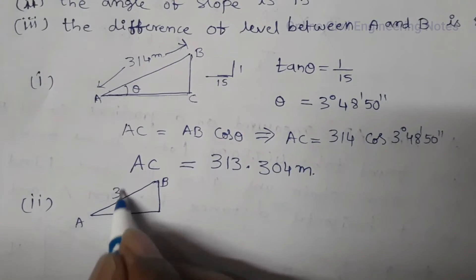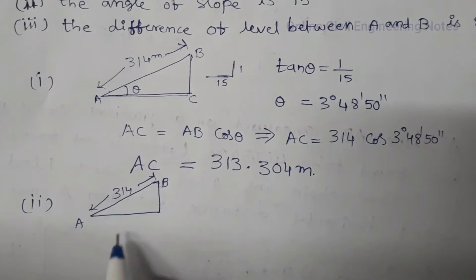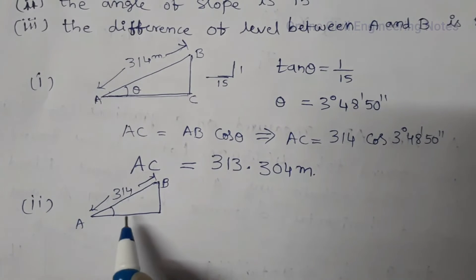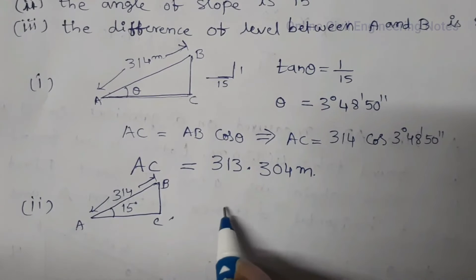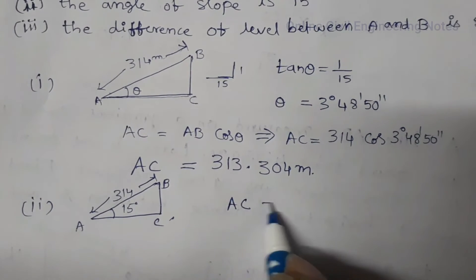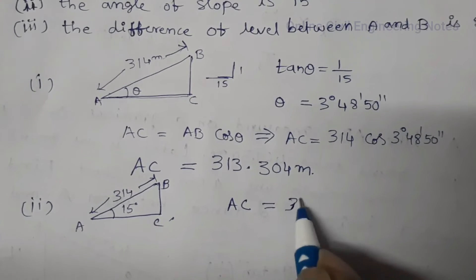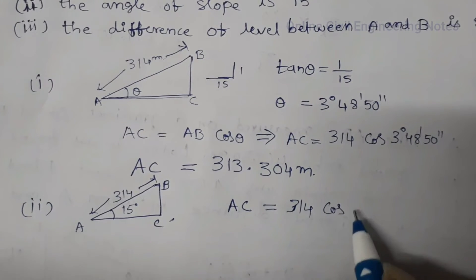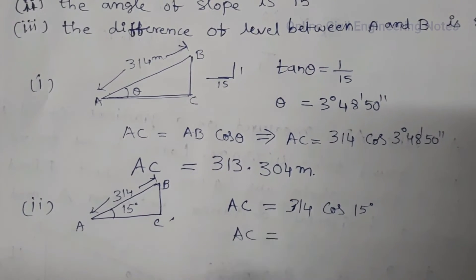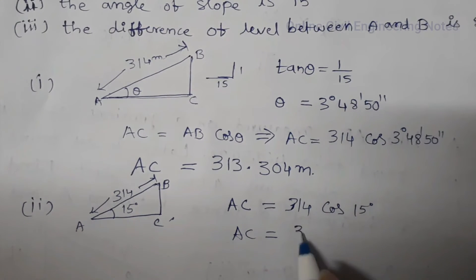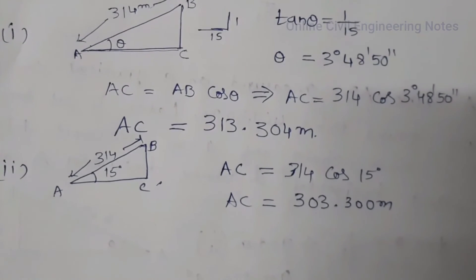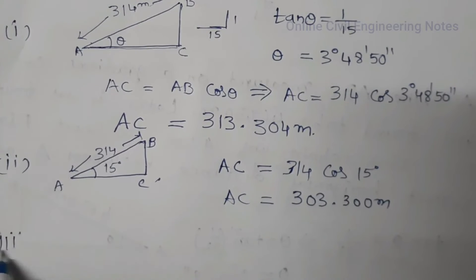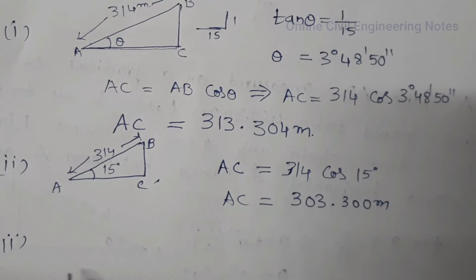Second question: the angle of slope is 15 degrees. The AB distance is 314 meters and the angle is 15 degrees. Directly, we can write the horizontal distance between A and B, that is AC, is equal to 314 multiplied by cos 15 degrees, which gives 303.300 meters.